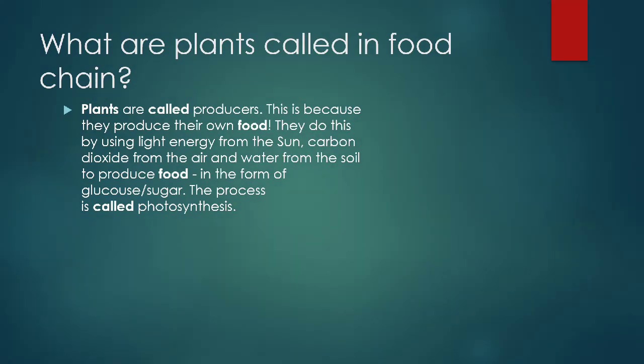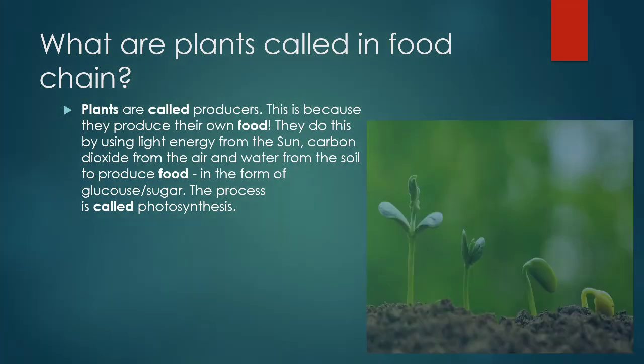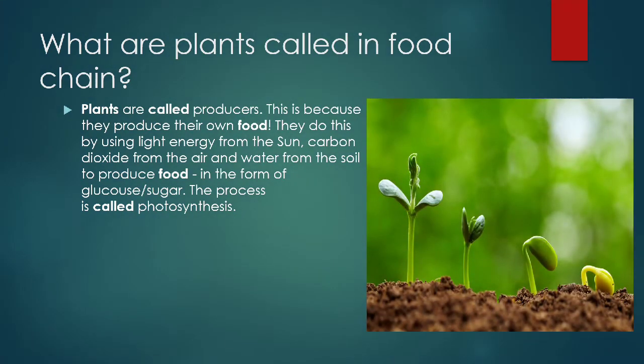What are plants called in the food chain? Plants are called producers. This is because they produce their own food. They do this by using light energy from the sun, carbon dioxide from the air, and water from the soil to produce food in the form of glucose or sugar. This process is called photosynthesis.